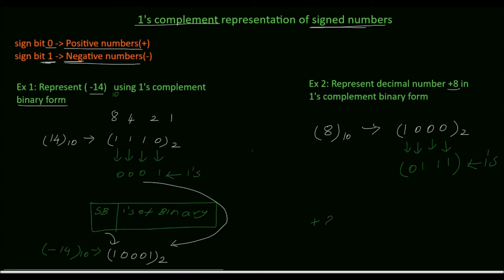For plus 8, we need to write it in one's complement form. For positive numbers, the sign bit is 0. The syntax is sign bit followed by one's complement of the actual binary. So write 0 for the sign bit, then the one's complement 0 1 1 1, giving 0 0 1 1 1 base 2 as the one's complement representation of plus 8. Thanks for watching — please subscribe for more videos.